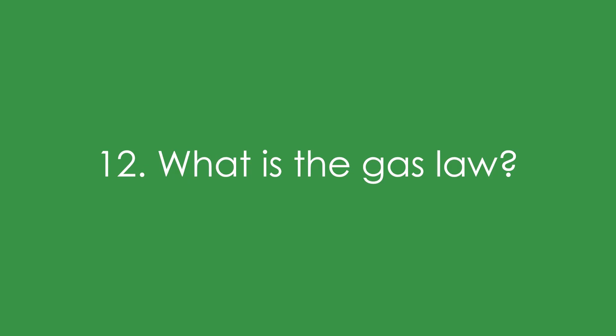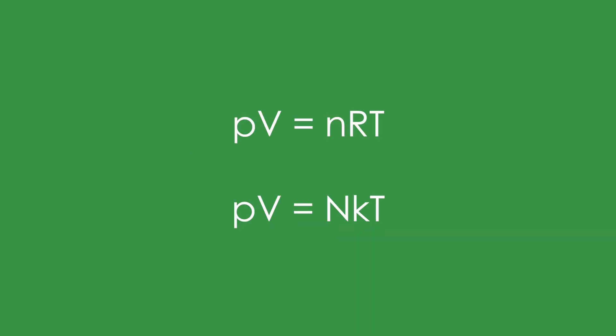Question 12: What is the ideal gas law? PV = nRT — that's moles times the gas constant 8.31, times temperature. Or PV = NkT — number of molecules times the Boltzmann constant. If you can't remember which is which, just remember that big N is a big number and little n is a small number.